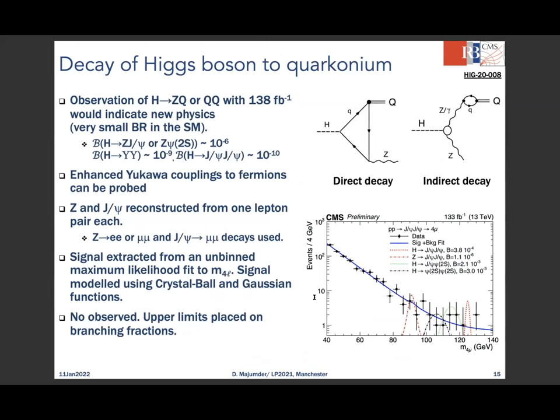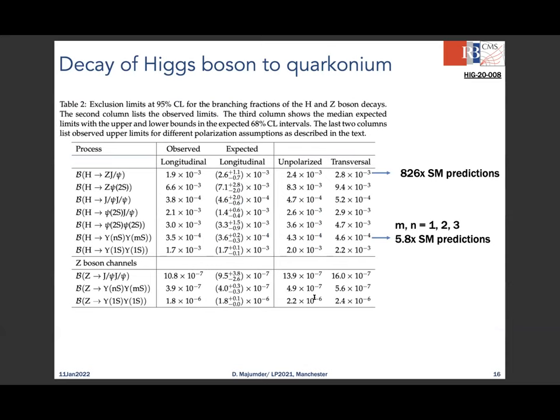The most recent result is the decay of the Higgs boson to a Z boson and a quarkonia, or two quarkonia pairs, giving four-lepton final states. The Z is reconstructed from either two electrons or two muons, and the quarkonia (J/ψ) is reconstructed in dimuons. A parametric fit of signal and background extracts the signal strength, and limits are set on the different Higgs→quarkonia branching fractions.